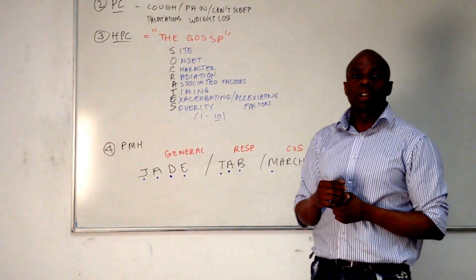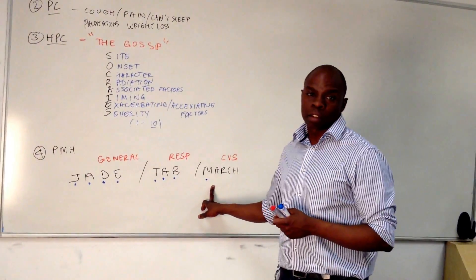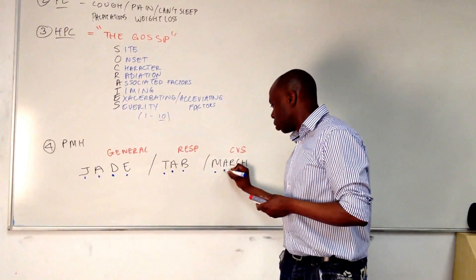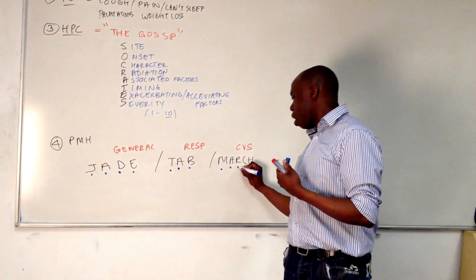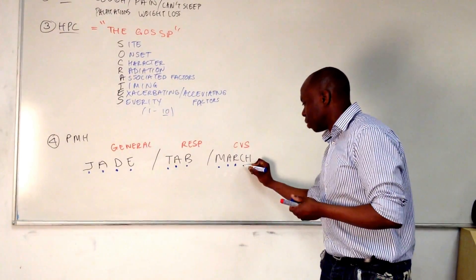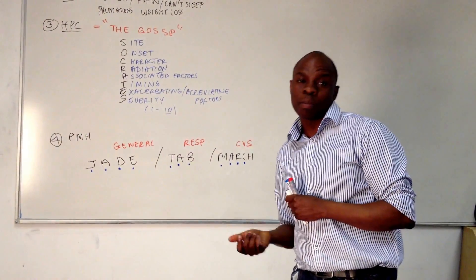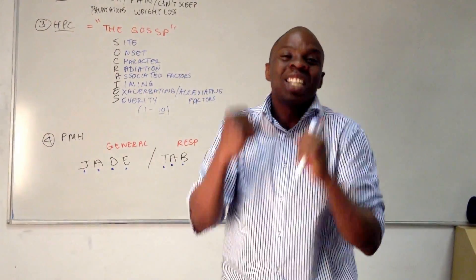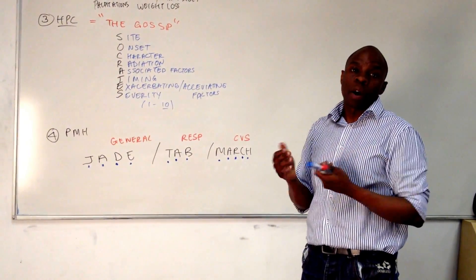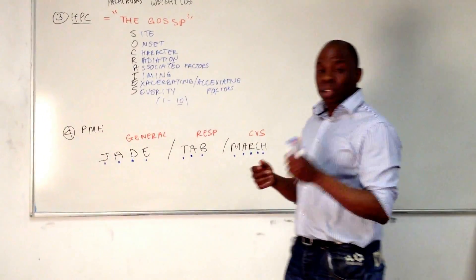M — have you ever had a heart attack? You don't ask 'have you had a myocardial infarction?' — that's a poor doctor's term. Try to minimise jargon and use the patient's words at their level. A is angina — have you ever suffered from angina? R is rheumatic fever — this is a rare one these days. Have you ever suffered from rheumatic fever? C — do you happen to know what your cholesterol is? Most people these days know about their cholesterol from their GP. H is hypertension — do you suffer from high blood pressure? And with all that, that normally covers a full sweep of your past medical history.